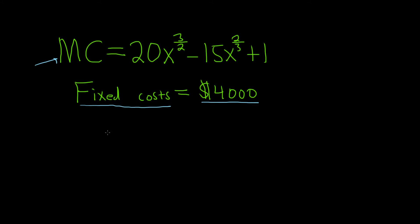So to find the cost function, which I'll call C of x, all you have to do is integrate the marginal cost. So we take the integral of this whole thing here. So this will be 20x to the 3 halves minus 15x to the 2 thirds plus 1, and then we put our dx here.